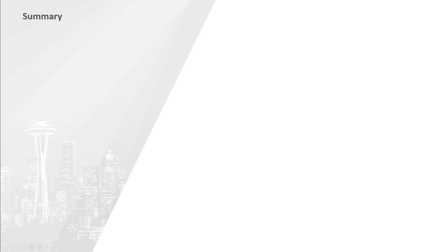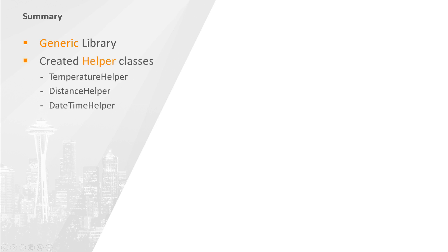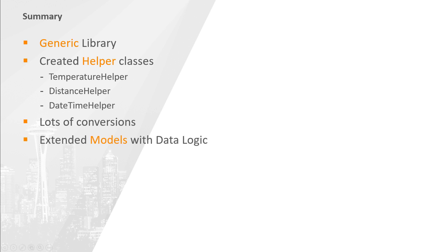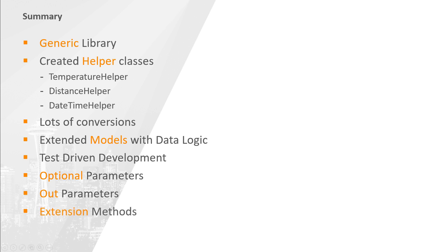Congratulations on plowing through yet another course module. We're getting real close to the end of the backend chapter, and I really hope that you're enjoying the course as much as I enjoy making it. But before we wrap up, let's discuss the summary and some dos and don'ts. In today's course, we've learned about and set up our own generic library, and filled it up with some helper classes in which we performed lots of conversions, which we used to extend our model classes so that they have methods to operate on their data. All of this was of course done using test-driven development, and as a bonus, we learned about optional and out parameters as well as extension methods.